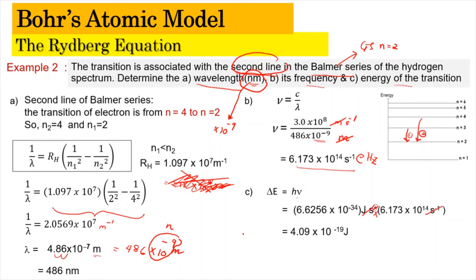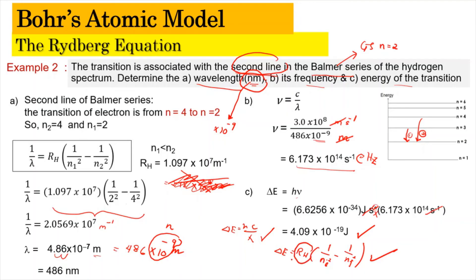You can also use delta E equals hc over lambda, where c is speed of light and lambda is already known, and get the same answer. Alternatively, use delta E equals RH times (1 over Ni squared minus 1 over Nf squared), but with RH equal to 2.18 times 10 to the power of negative 18 joules. Any of these formulas will give the same answer.